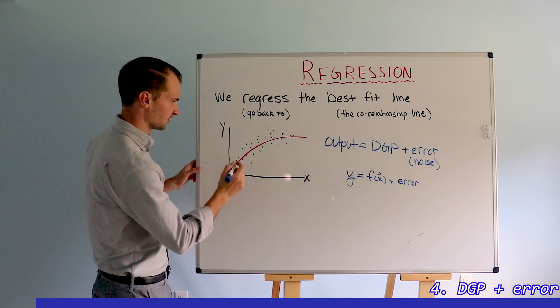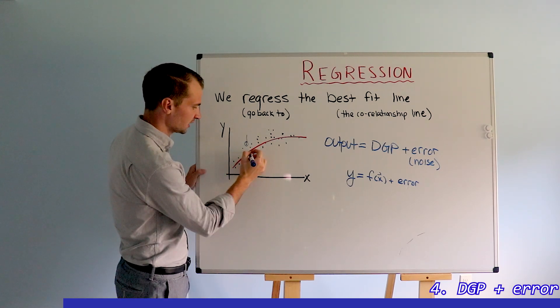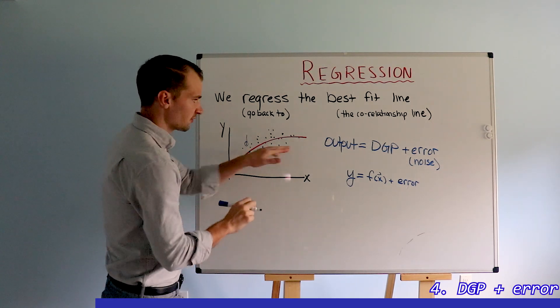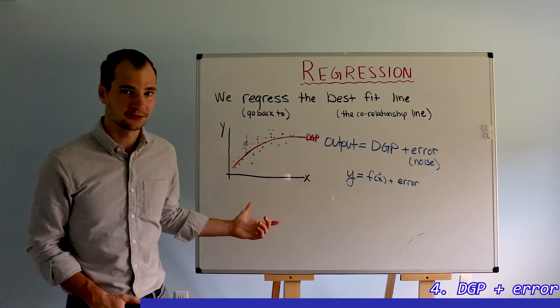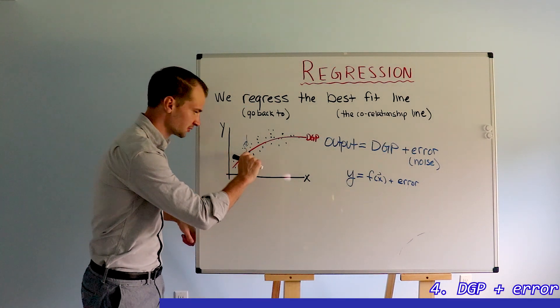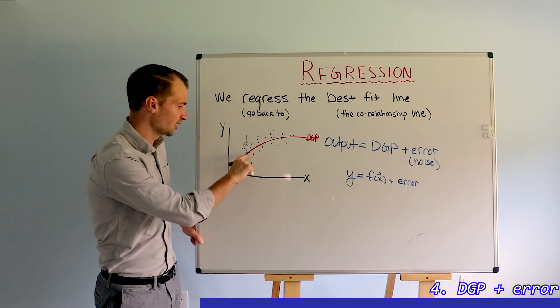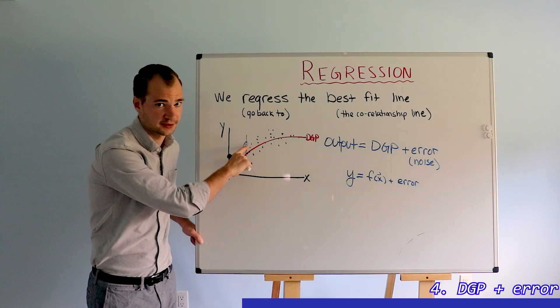Now what does that look like on the graph? Well this observation right here, we would expect it to be on this line. However, it's not. So this line represents our data generating process. So why do we call it regression? Because we regress back to this line if we don't have any other information that would tell us that it should be any different than this line.